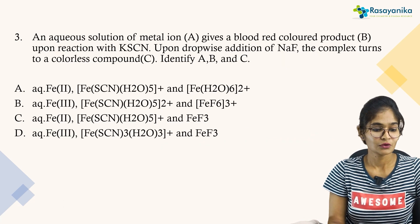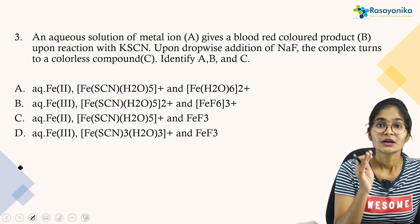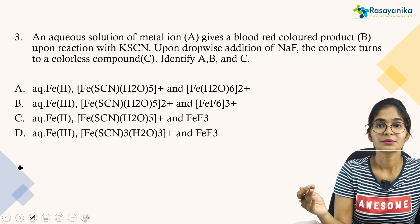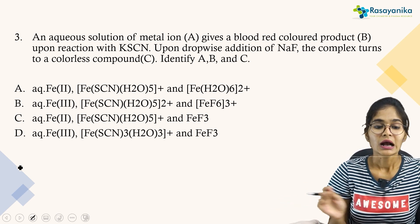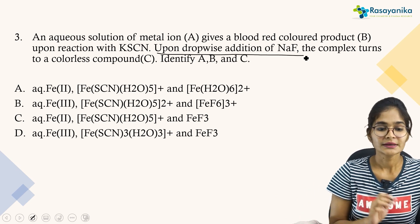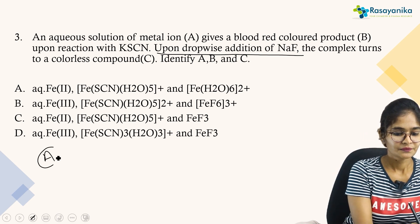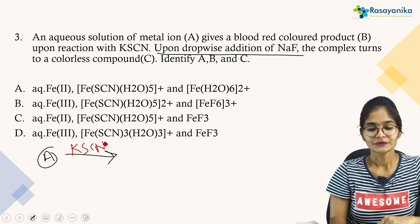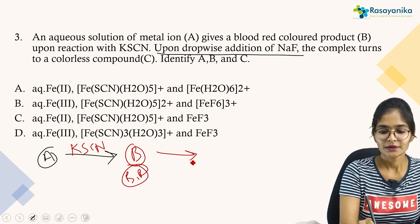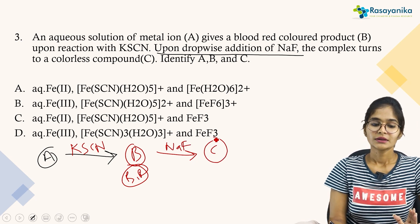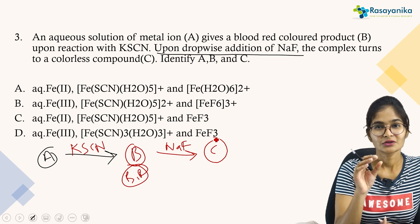Now for the third question, which asks about the color and colorlessness of complexes. An aqueous solution of metal ion A gives a blood-red colored product B upon reaction with KSCN; upon further addition, the complex turns to a colorless compound C. We need to identify A, B, and C. The approach involves the concept of charge transfer processes as well as normal oxidation state calculations. In all given options, iron complexes forming octahedral species are involved.